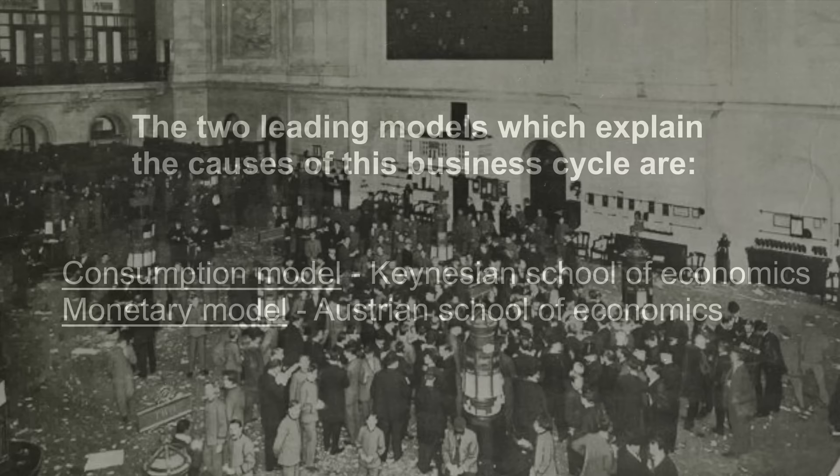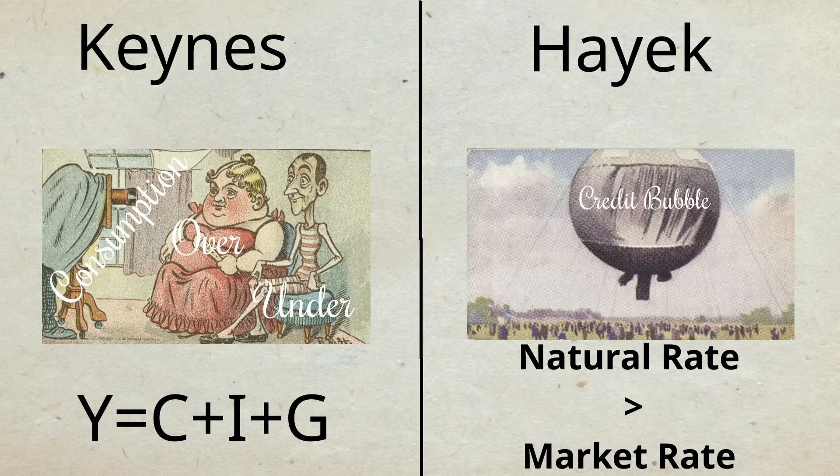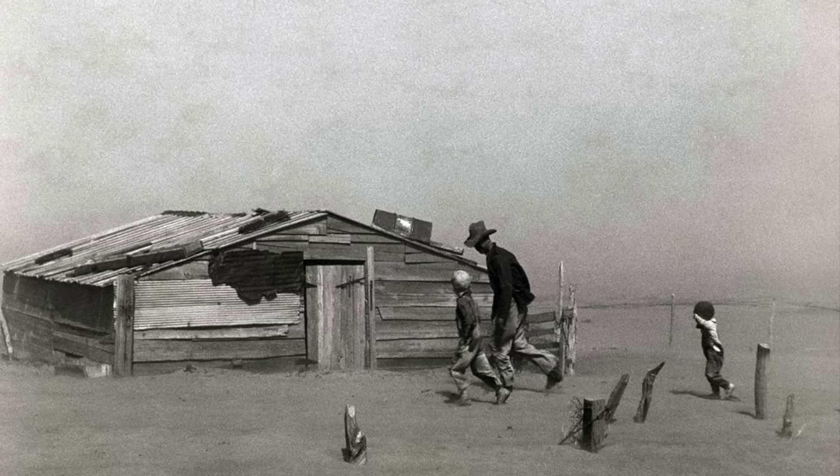The two leading models which explain the causes of the Great Depression are: 1. The Consumption model — Keynesian School of Economics, and 2. The Monetary model — Austrian School of Economics. There are also many heterodoxic models that explain the crisis from shocks from the primary sector,